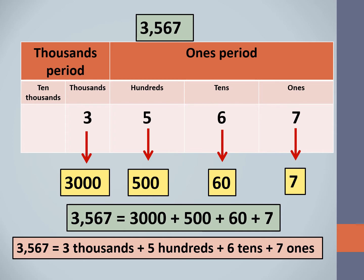As you can see here, the digit 3 is in the thousands place, so its place value is 3,000. The digit 5 is in the hundreds place, so its place value is 500. The digit 6 is in the tens place, so its place value is 60. The digit 7 is in the ones place, so its place value is 7.